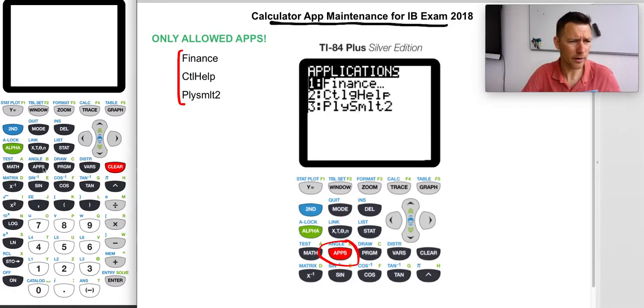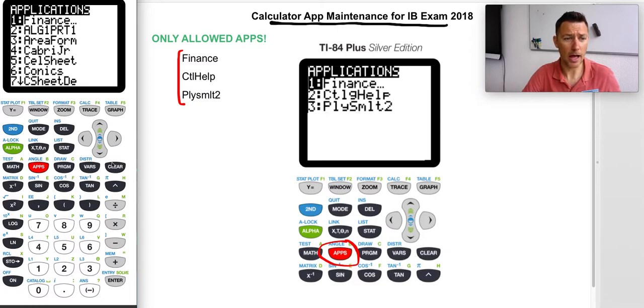For my calculator on the computer, it's a lot, and all of this would need to go except Finance, Catalog, Help, and PolySmlt if you really want them. If you don't want them, that's fine too.